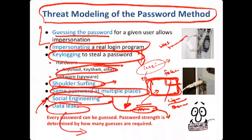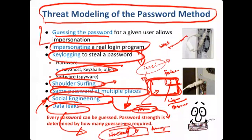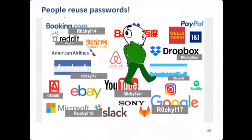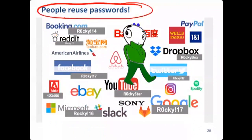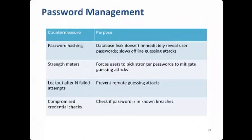Seventh: data leaks — your password is stored on every website you log into, like Amazon. If those websites are hacked, the password file for all users ends up on the dark web. Cyber criminals can buy a password file of 50,000 users for perhaps $1 million. So the first lesson: don't reuse passwords across multiple accounts.